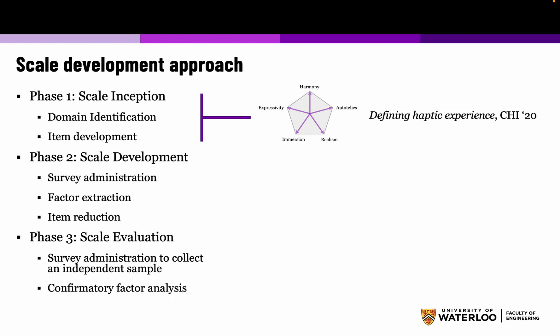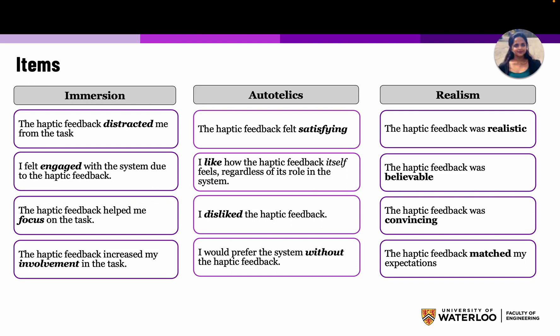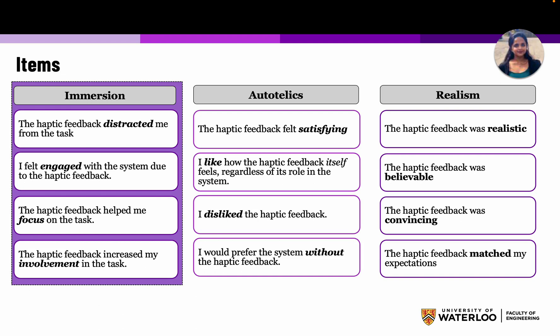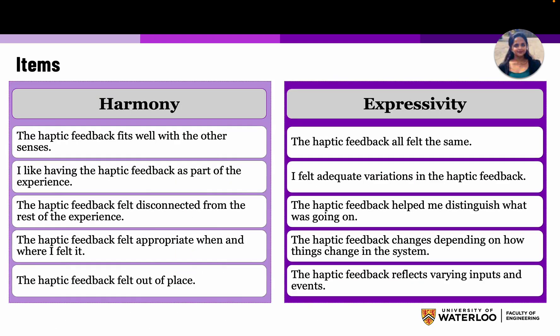So the first step was the initial domain identification of haptic experience and developing initial items. We followed this up with work on measuring haptic experience, presented at World Haptics 2021. This work took the initial items and iterated upon them to refine them for deployment in a scale. The final items were four or five items per construct. For example, with immersion: 'the haptic feedback is distracting me from the task,' 'I felt engaged with the system due to the haptic feedback,' or 'the haptic feedback helped me focus on the task.' Similarly, for autotelics: 'the haptic feedback felt satisfying,' and for realism: 'the haptic feedback felt realistic.' All five constructs were measured with these different items.